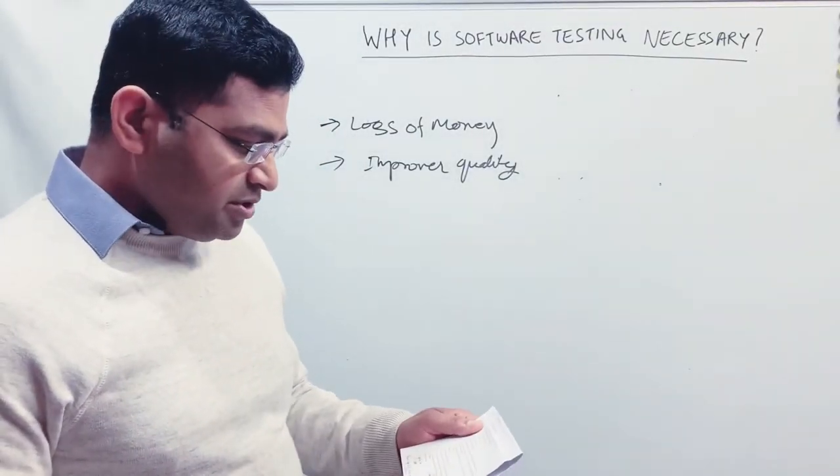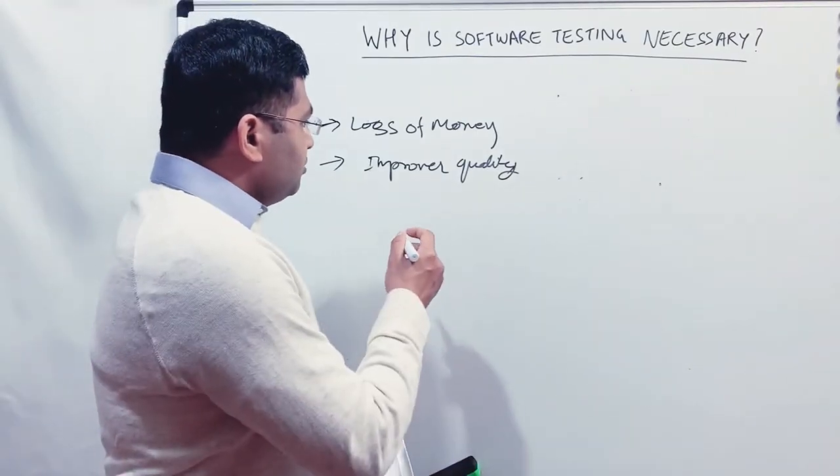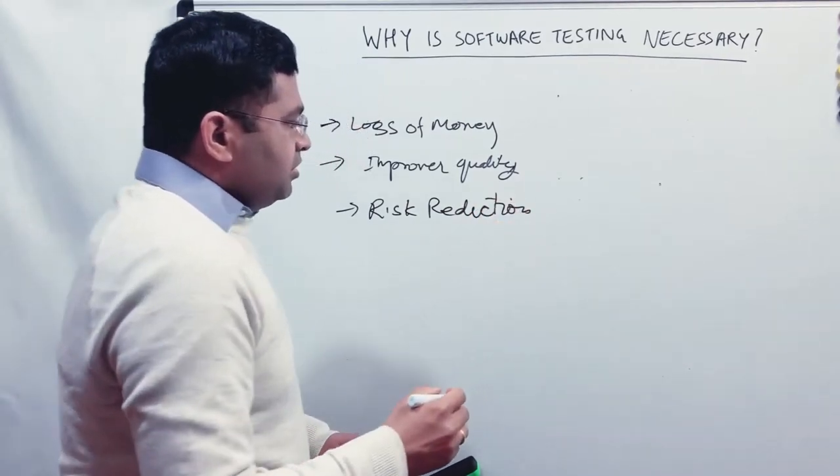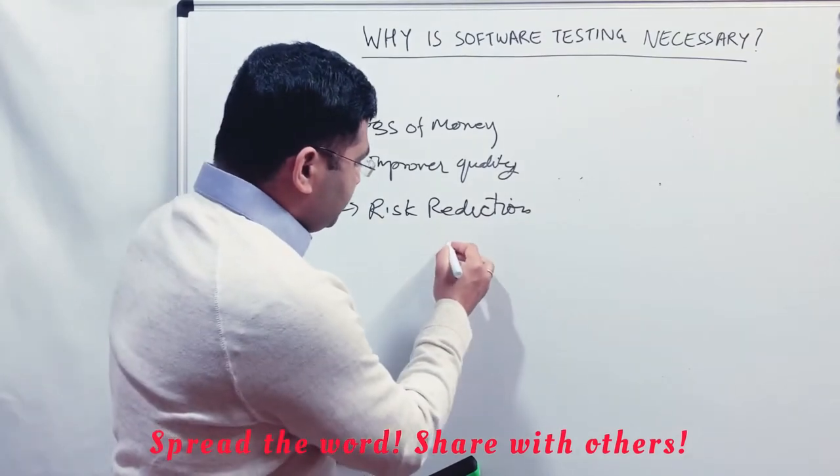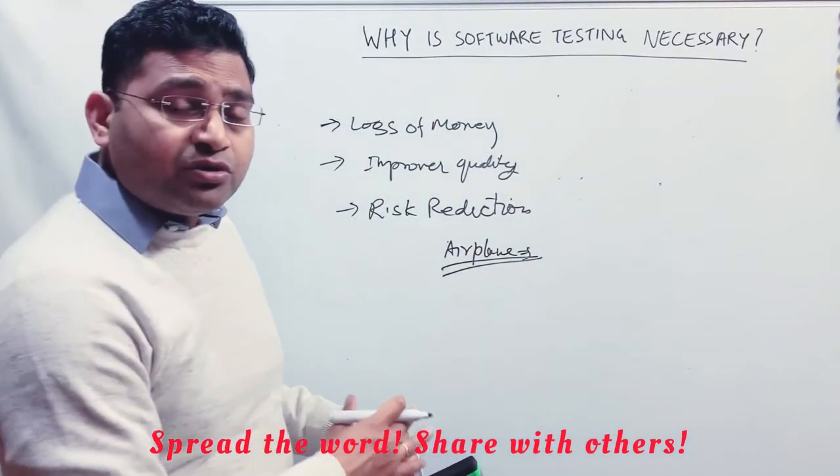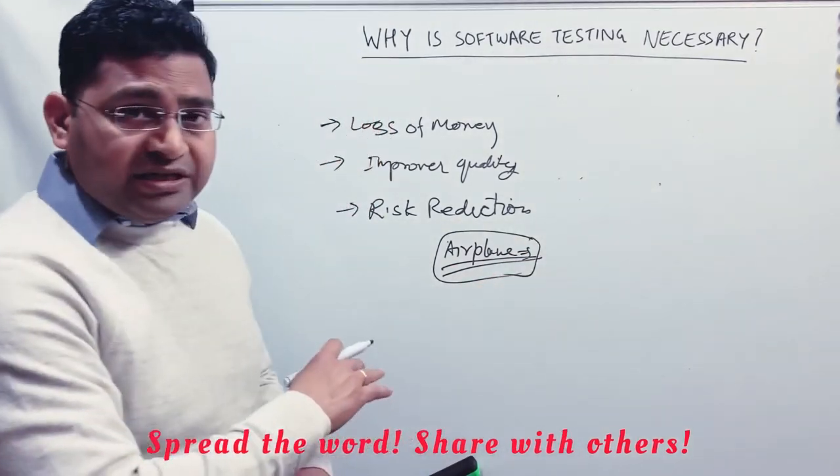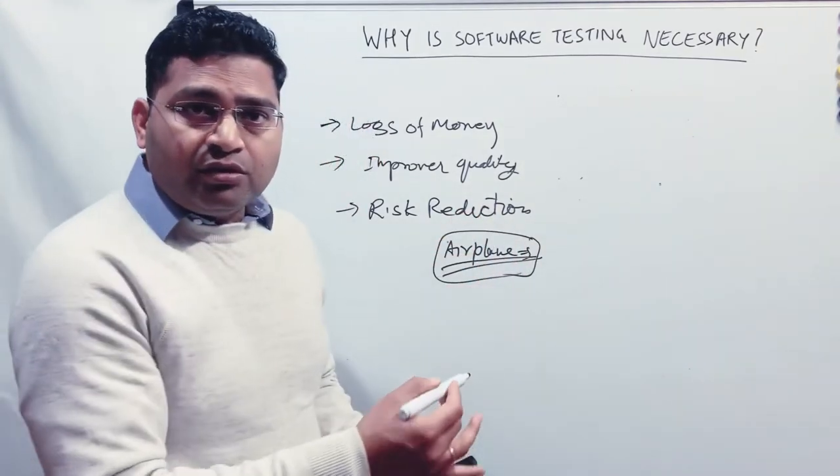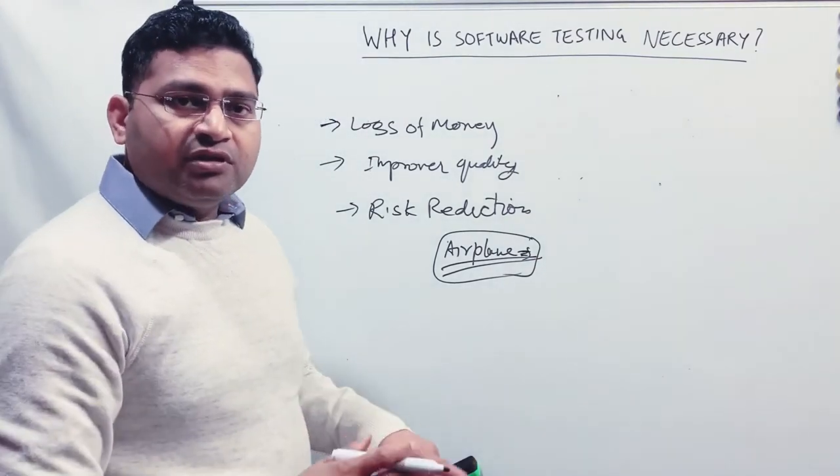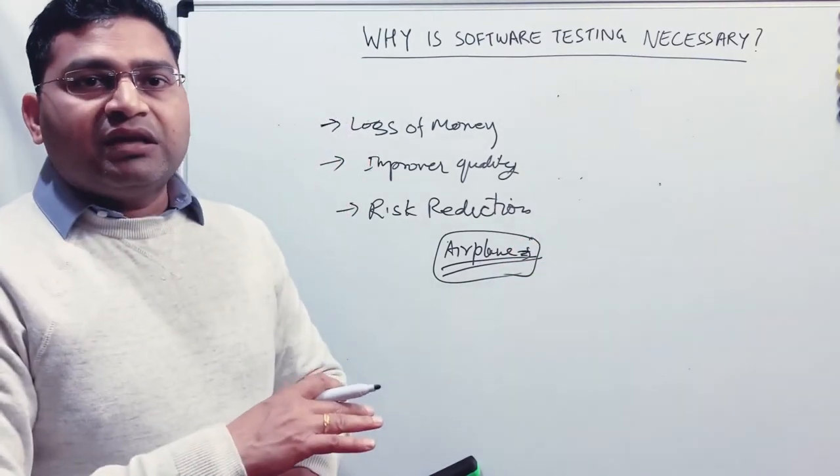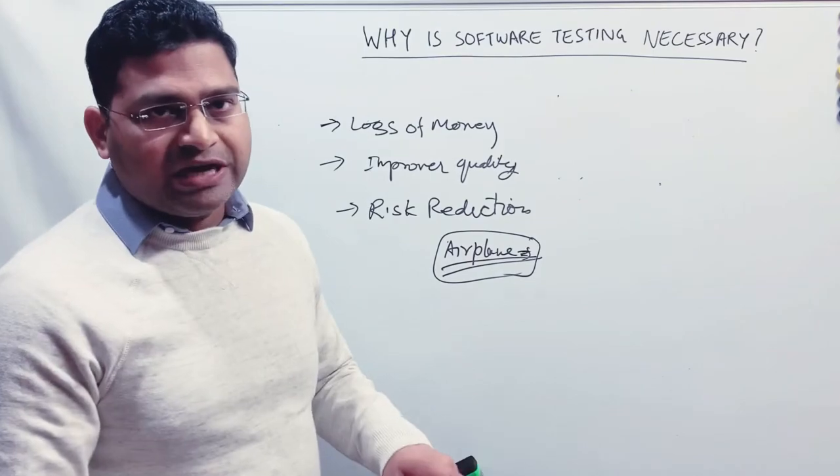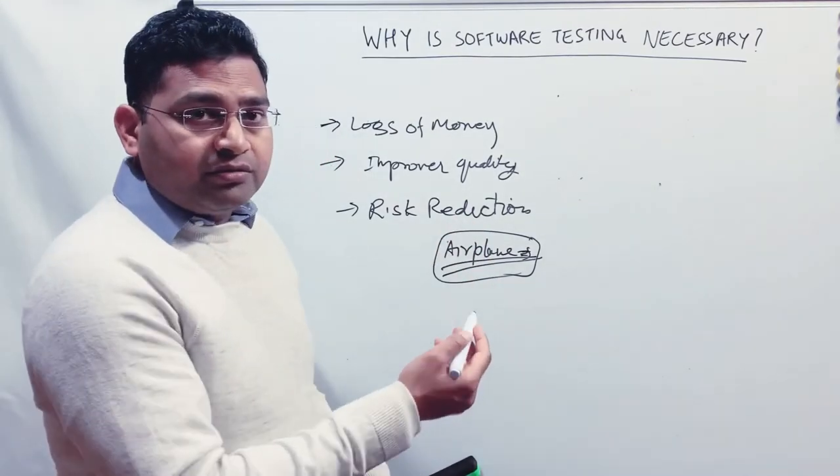The other importance or the other necessity becomes it reduces the risk. So how it reduces the risk? Third thing is risk reduction. So say for example, you are testing software which is used within the airplane. Now you can imagine, if you do not test the software or you do not test the software properly that is used in the airplane, in any of the functions of the airplane, there is a lot of risk of financial impact and to the lives of the people that are traveling. So when you test the software that is being used in any life threatening or anywhere, it reduces the risk of either it is life threatening, or to the organization's reputation, or to the overall financial impact that could happen because of the failure for that particular software.